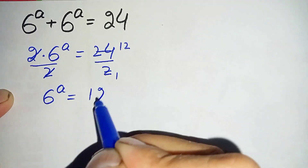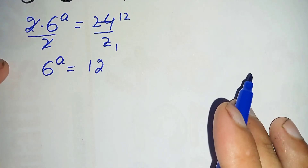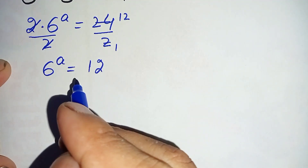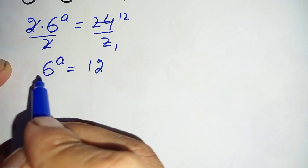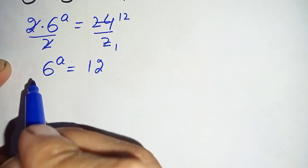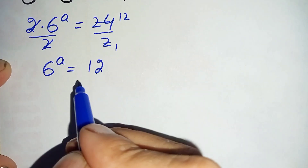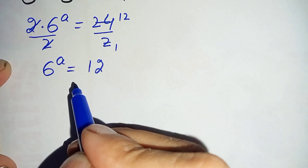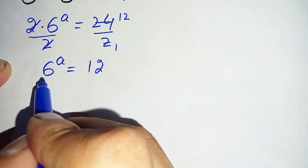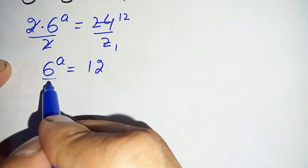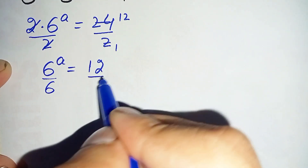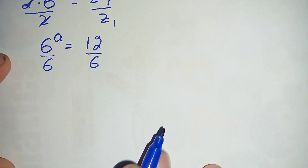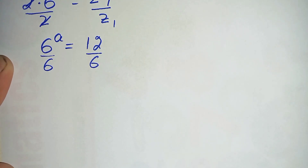Now how can we solve this equation further? There are two approaches: one is to directly take common log on both sides, and the second approach is to divide both sides by 6, because both numbers are divisible by 6. Here we will use the second approach and divide both sides by 6, using an exponential property.